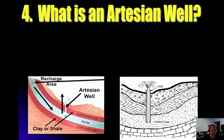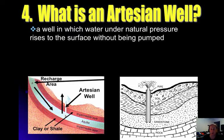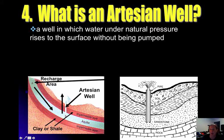An artesian well is another special situation. In this case, the groundwater is on a slope. As the water moves downward within the ground and you drop a well in, due to the pressure from the water coming down, it will pump up without any mechanical pump — it naturally rises to the surface due to the pressure beneath. So when you have certain areas with sloped groundwater, an artesian well can be drilled in.